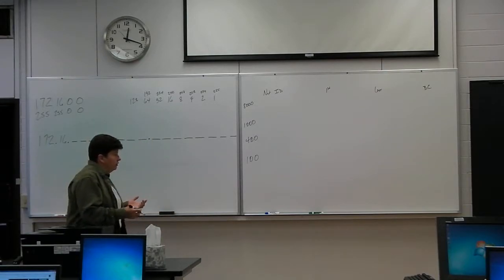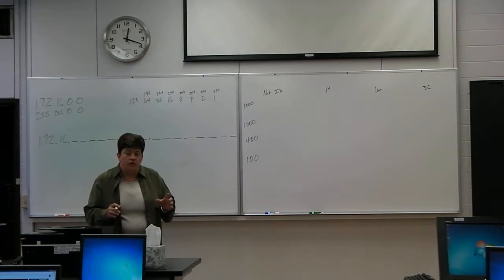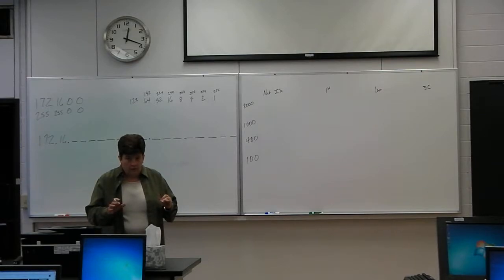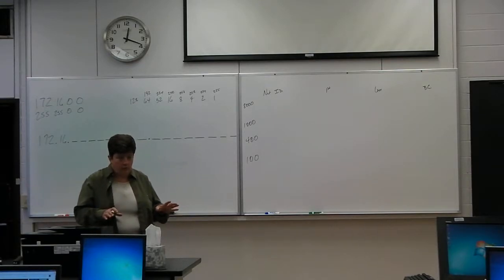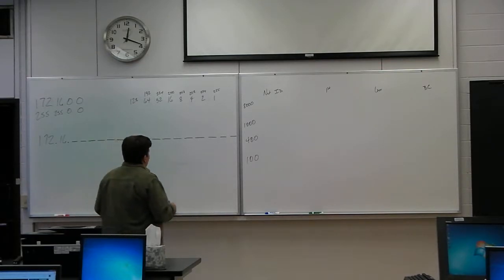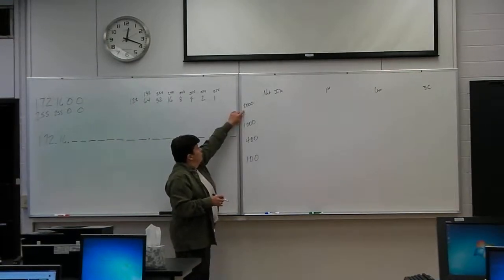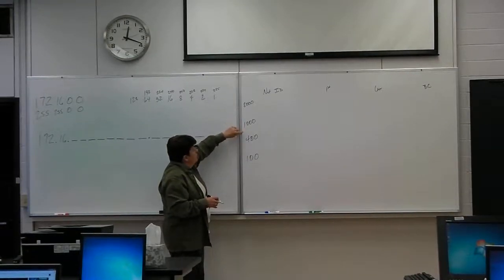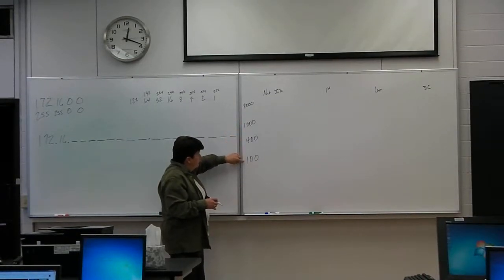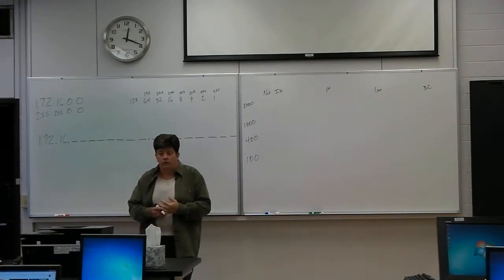So the assumption I'm going to make is that if I gave you a list of numbers you could put those in order from highest to lowest. Is it okay if I go out on that limb and assume you could do that? So what we've been asked for, we've been asked for four networks, one with 8,000, one with 1,000, one with 400, and one network that has 100 hosts.